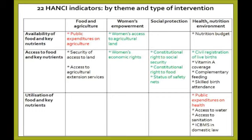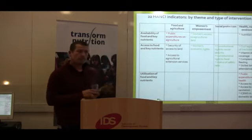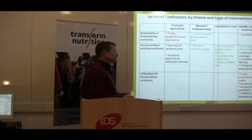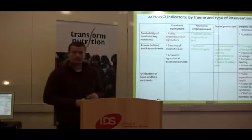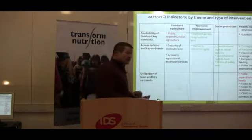We also have indicators very much about putting particular policies in place, and others focused on ensuring people's right to food, rights to social security, and putting legal frameworks in place that can protect children.